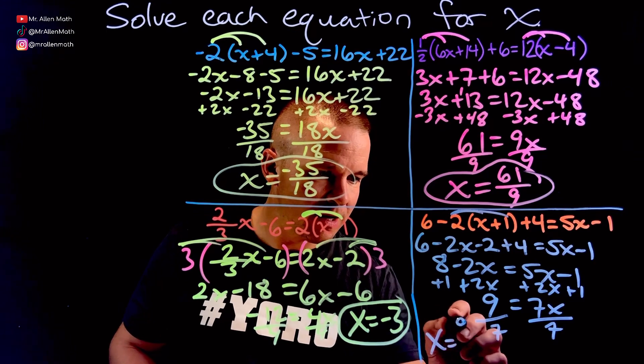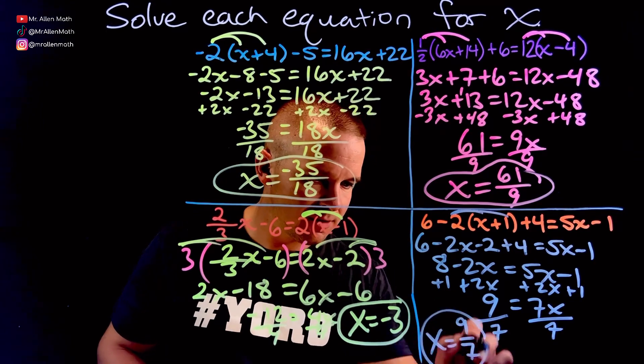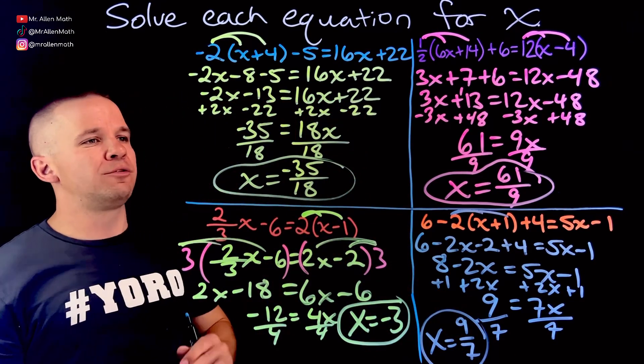So we got nine over here and we got ourselves another fraction. Divide by seven, I get x equals nine sevenths. Final answer. Beautiful.